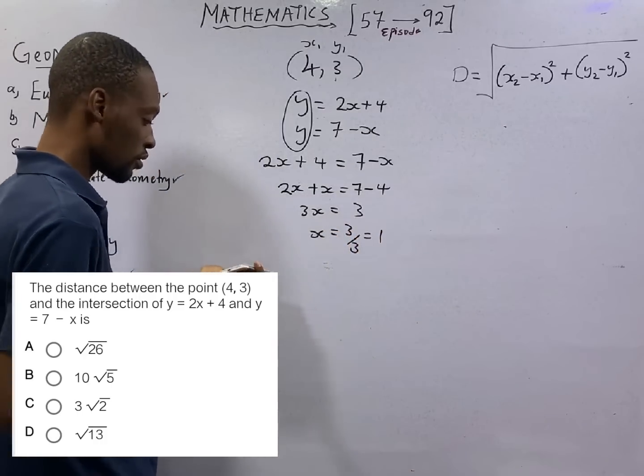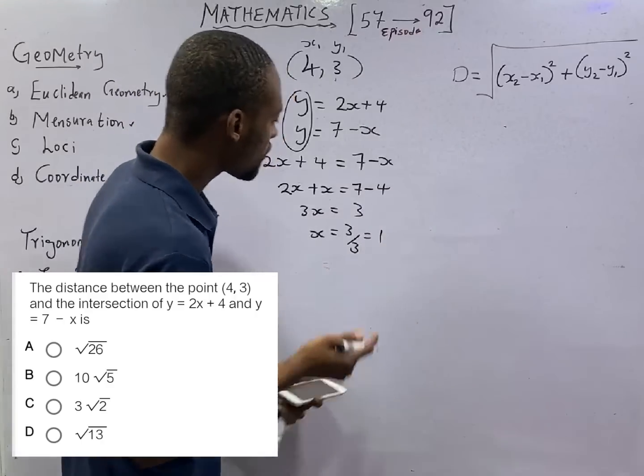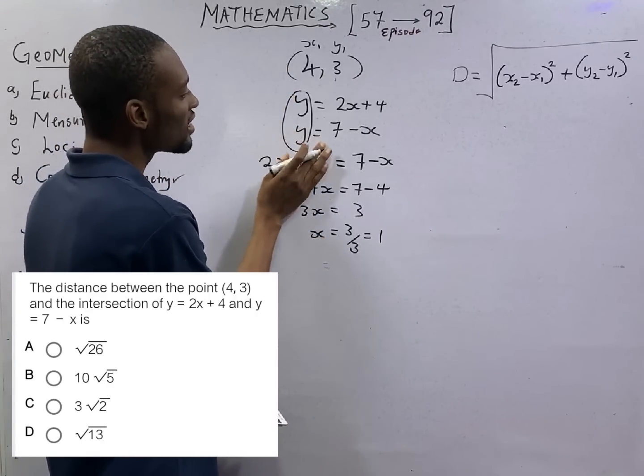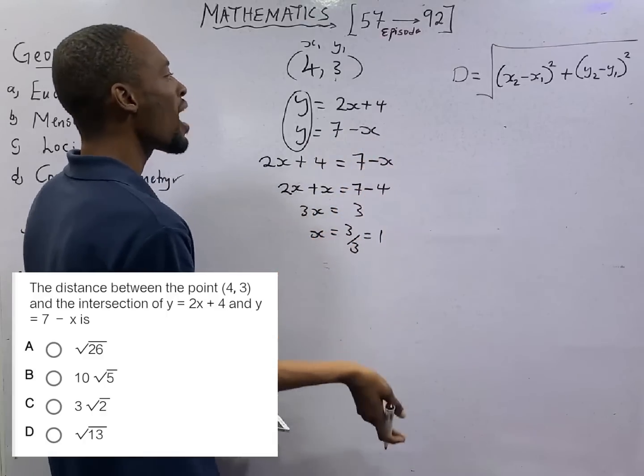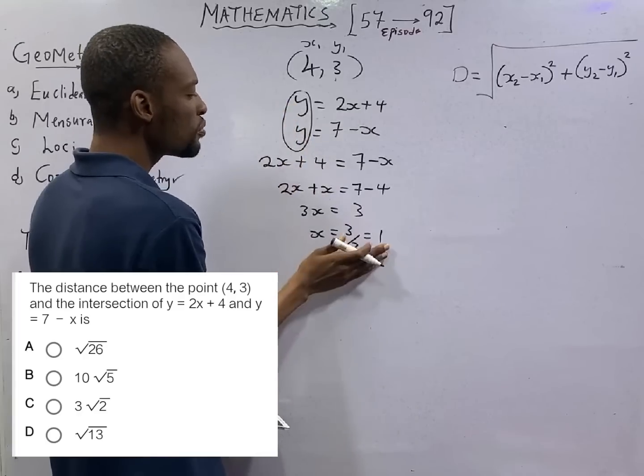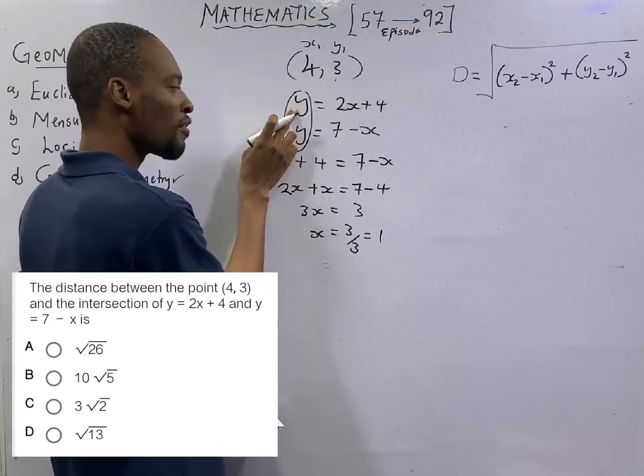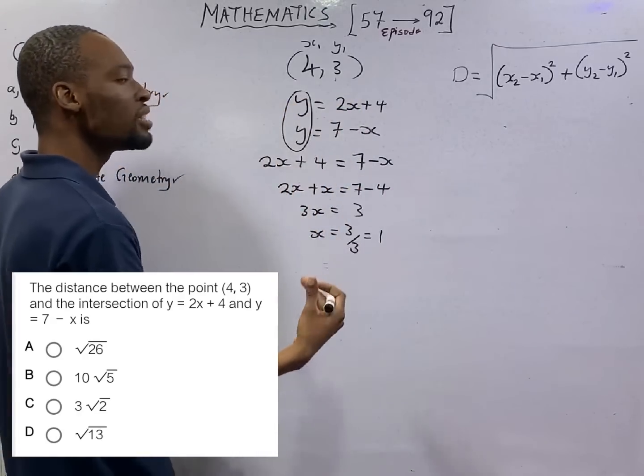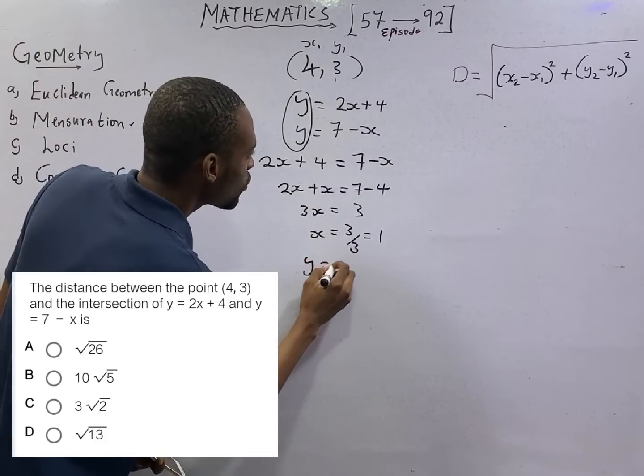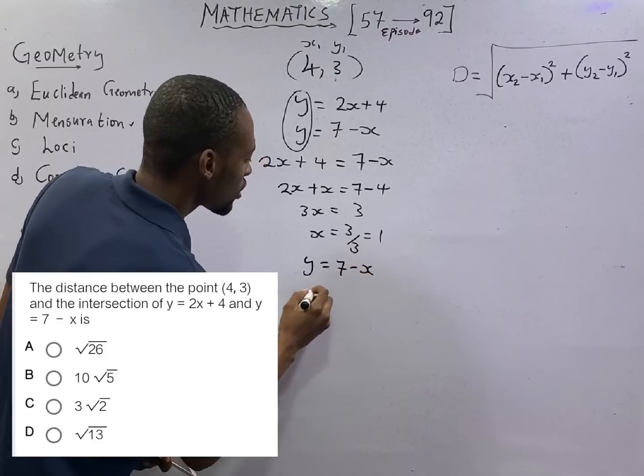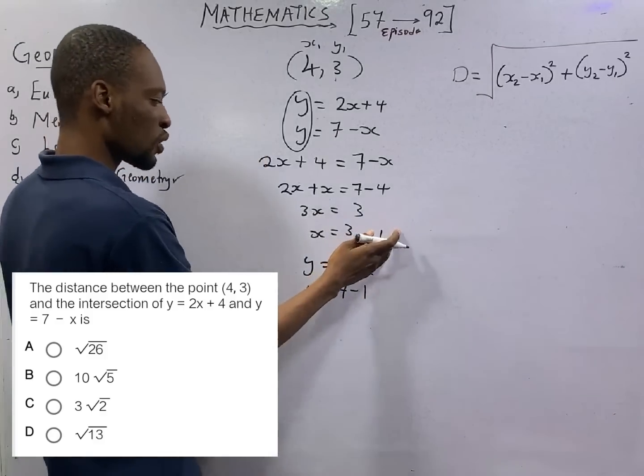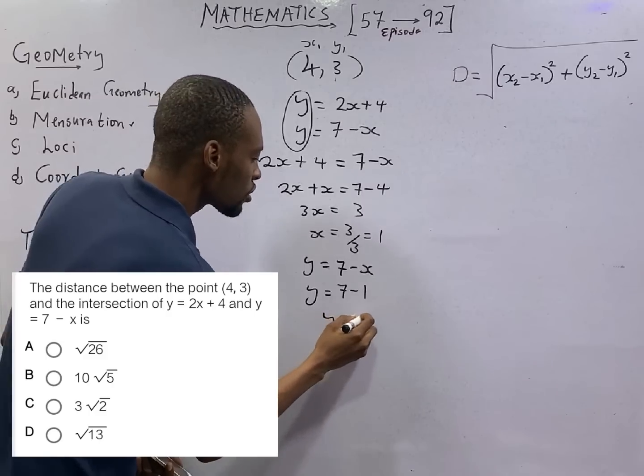So if x is 1, we are told that y is 7 minus x and y is also 2x plus 4. Any of the equations, when you put x to be 1, you will get your value of y and they will both be the same. So from y equals 7 minus x, y equals 7 minus 1 because x is 1, and y equals 6.